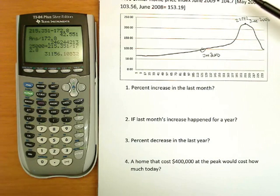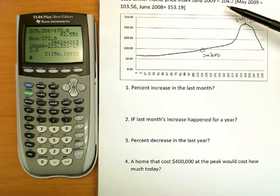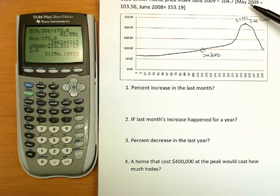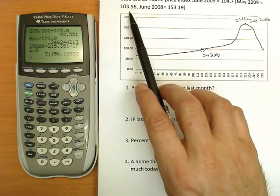The index number that was released last week was 104.7. It's released for June. The index numbers run a little bit behind. This is obviously in August. They run about a month and a half behind as they compile their data. So for comparison's sake, May of 2009, the index was 103.56.